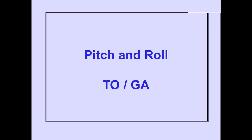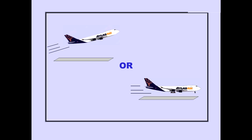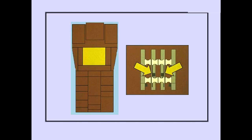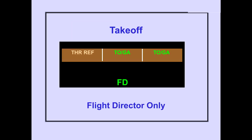Now let's discuss the combined pitch and roll mode: TOGA. The TOGA mode can be selected on the ground for takeoff or in the air for go-around. Pushing the TOGA switch on either thrust lever 2 or 3 selects the TOGA mode. Use of the TOGA mode for takeoff is a flight director only mode. The TOGA takeoff functions will be discussed in the flight director module.